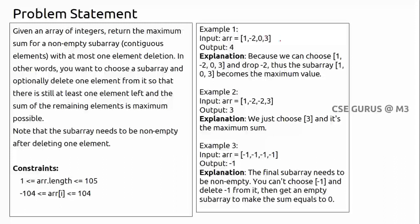Note that `[1, 0, 3]` is not a subarray — it's a subsequence. The problem asks for a subarray, so elements must be continuous. You could take `[0, 3]` and delete `0` to get 3, or just take `[3]`. Deletion is optional, so the answer is 4.